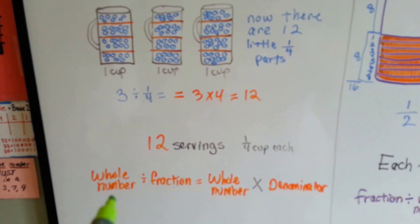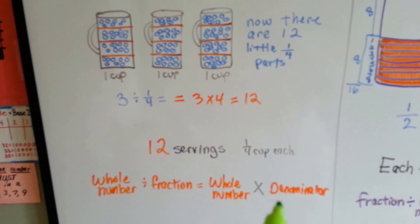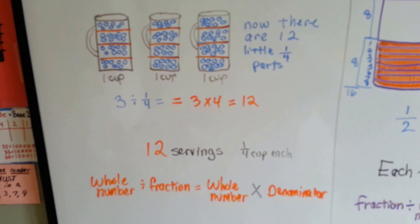Remember, when you have a whole number divided by a fraction, it's the same thing as the whole number times the denominator. The answer is twelve.